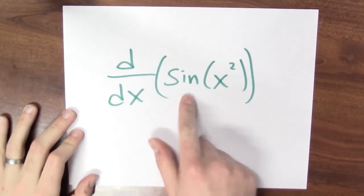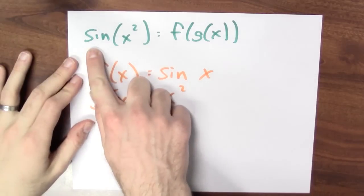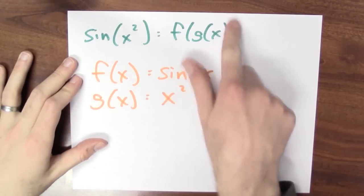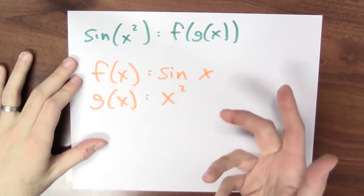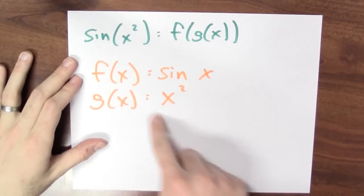Let's combine the chain rule and the derivative of sine to differentiate a slightly more complicated function. Let's try to differentiate sine of x squared. We can realize this function as the composition of two functions. I can write sine of x squared as the composition of f and g, where f is the sine function and g is the squaring function. How do I differentiate a composition of two functions? I use the chain rule.